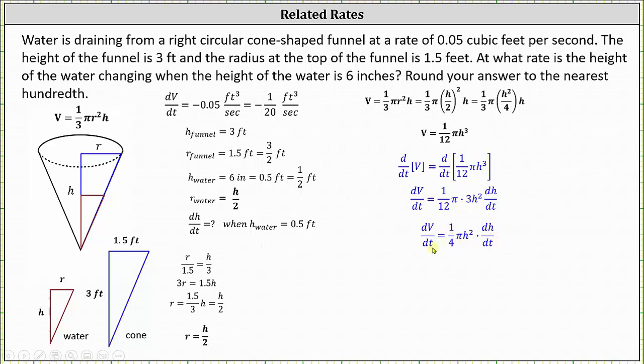And now we perform substitution and solve for dh/dt. We know dV/dt is equal to negative 0.05, pi is a constant, and h, the height of the water, is 0.5 feet. And now we solve for dh/dt. Let's first clear the fraction from the right side by multiplying both sides by four, which gives us four times negative 0.05 equals pi times the square of 0.5 times dh/dt.